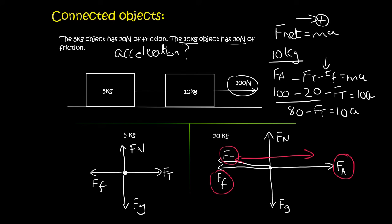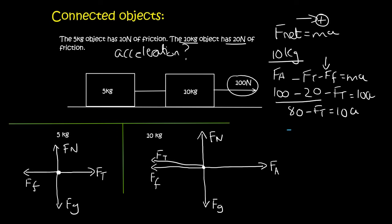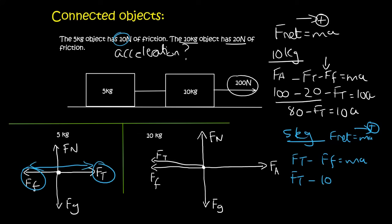We now do the same thing on the 5 kilogram object. So we say we know F_net is equal to ma and we choose right as positive. Now what forces are acting on this one? Well, we're moving in this direction here, so it's only FT and FF. So we say FT minus FF equals to ma. The tension force we don't know what that is. The frictional force, well that's they've told us is 10 newtons. Its mass is 5, but we don't know the acceleration.